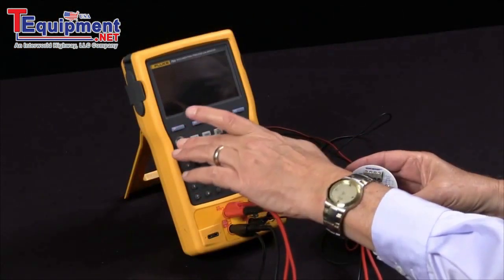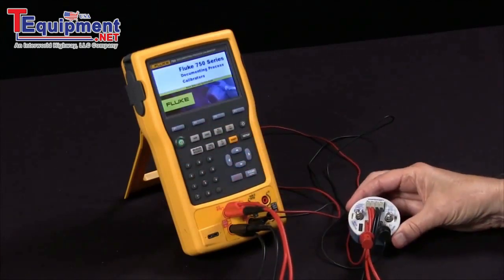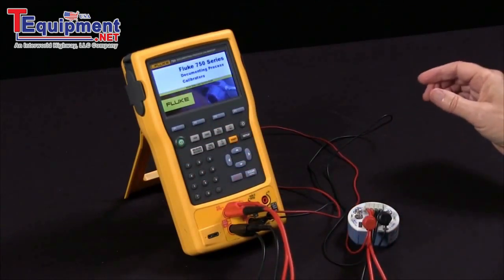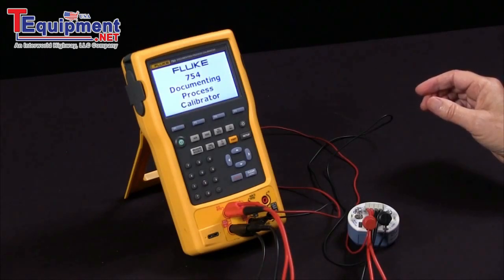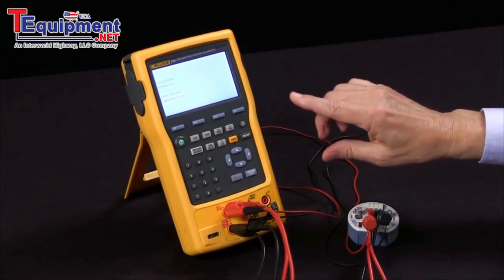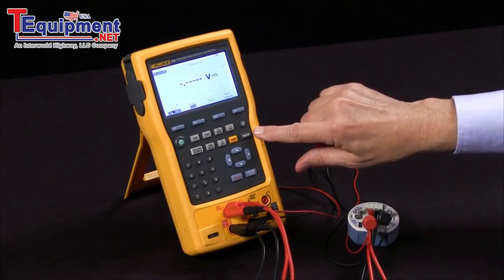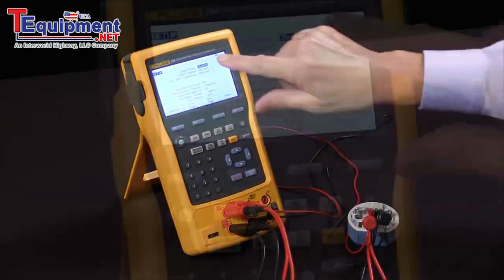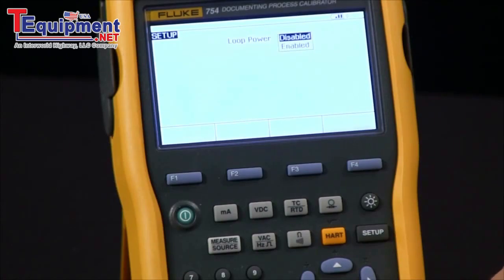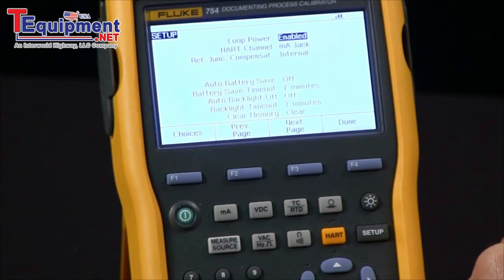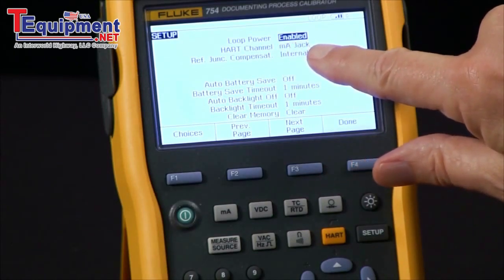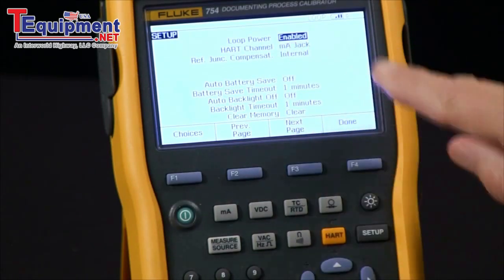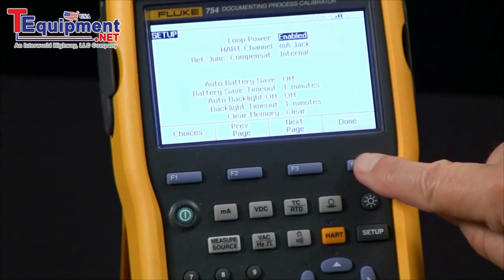I'll turn the unit on and we'll first go to setup and enable loop power. Right now it's disabled, so I'm going to enable the 24 volt loop power. You'll also notice the HART channel communication is set up via the milliamp jack, so that'll work fine for our setup.